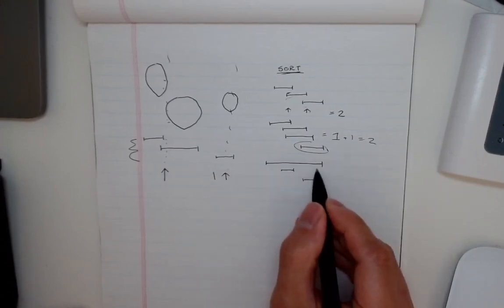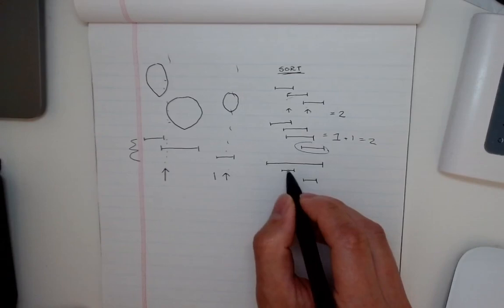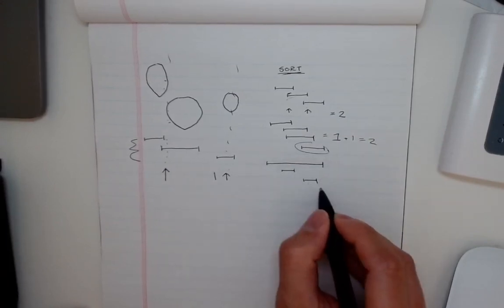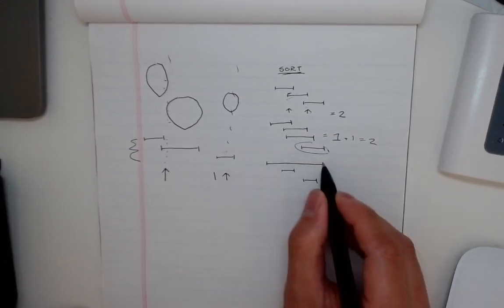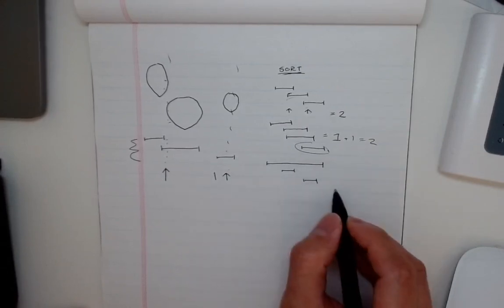our algorithm would think, well, these starts are less than the end of here. So this should be one arrow, right? But we can clearly see, nope, it's going to take two arrows here because these two, even though they get engulfed here and overlap with the first one, they don't technically, they'll still require two arrows.